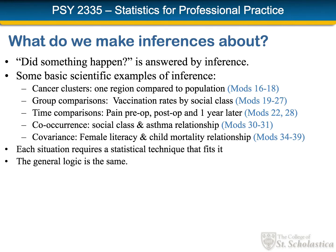We also might be looking at co-occurrence — for instance, do social class and the presence of asthma go together or not? And finally, co-variance: things being a trend that happens at the same time. Across many nations, we see that nations with high female literacy tend to have low child mortality, and that as female literacy goes down, child mortality goes up. Each of these situations requires a particular statistical technique, but the general logic of inference is the same in each one.